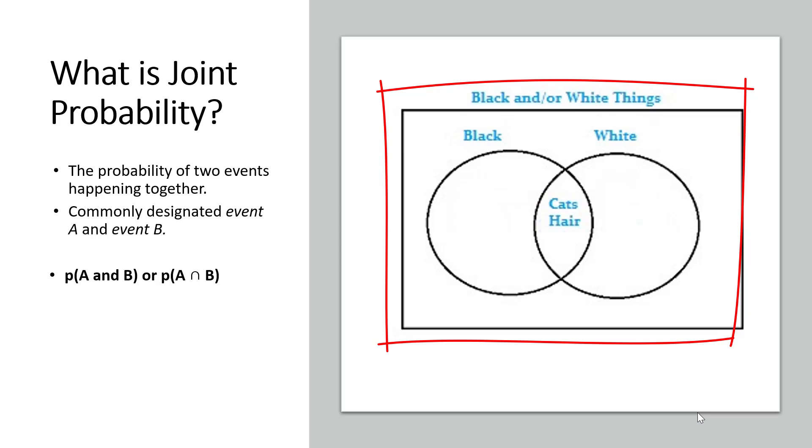We have black things and white things, and here's our intersection. Cats can be black or white, and hair can be black or white. So this central area is where we're going to find our joint probability.